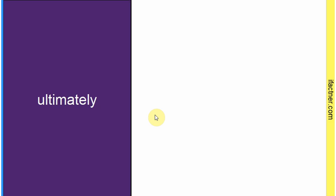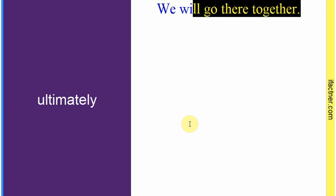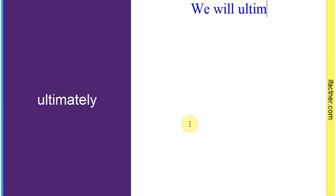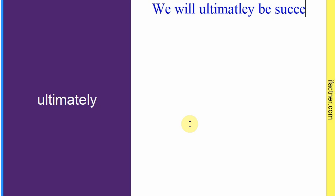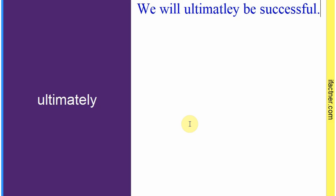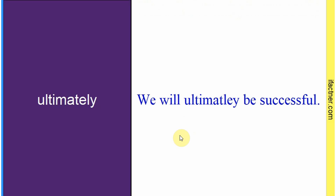Word hai: 'ultimately'. Sentence: 'We will, ultimately, be successful.' Hum aakhir, aakhir kaar, aakhir tor pe, yeh aakhir kaar kamyaab honge. Toh 'ultimately' hota hai 'aakhir mein', 'end mein', 'finish mein'. Sentence banaaya: 'We will, ultimately, be successful.'